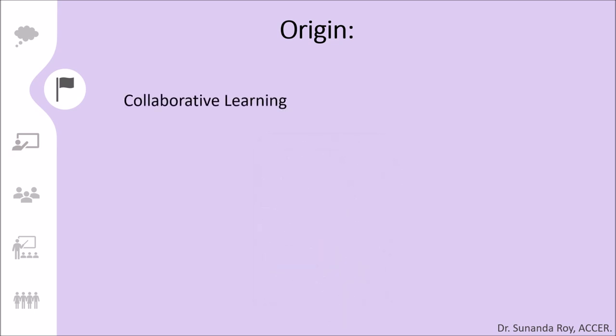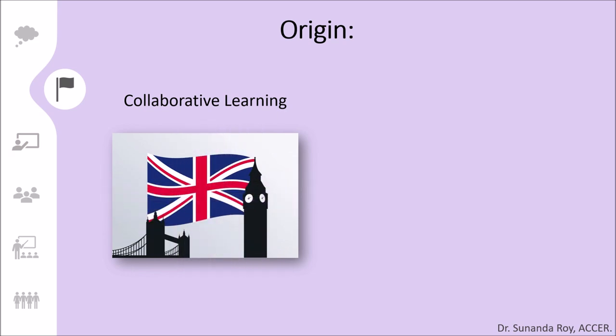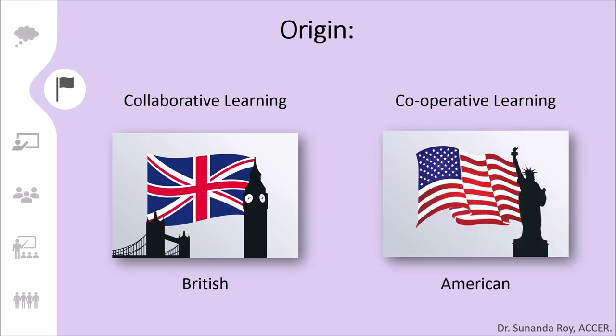Over 200 years ago, George Jordan, Professor of Logic and Philosophy at the University of Glasgow, designed the first known collaborative learning activity for his university students. So we can trace back the history of collaborative learning to Britain, that is having British origin. On the other hand, cooperative learning is more recent and has been popularized by two brothers, David Johnson and Roger Johnson, during the 1980s from the University of Minnesota in America.